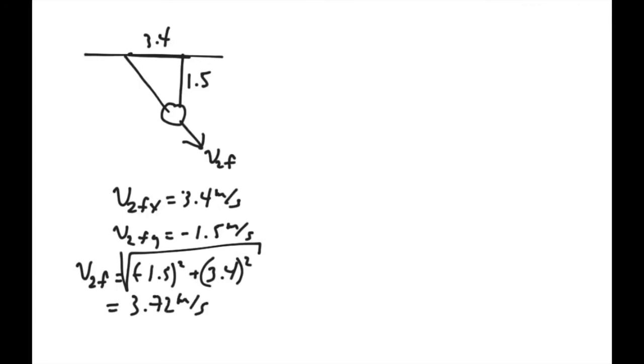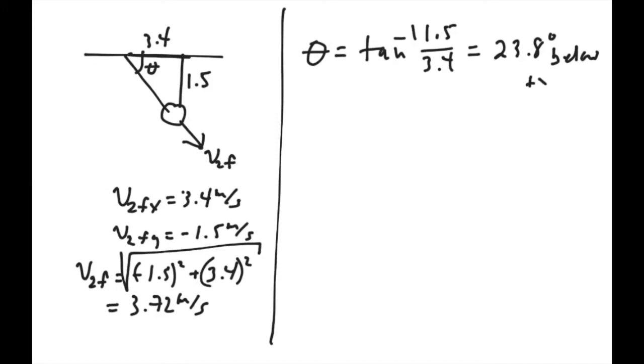So that is the final velocity, at least the speed, of mass 2. The angle would be the inverse tangent of the y over the x. So we'll have 1.5 over 3.4, and that is 23.8 degrees. And in this case, that's going to be this angle right here. So that's going to be below the x-axis. So that will be below the positive x-axis.